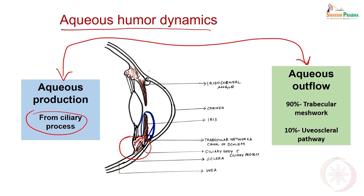The aqueous humor goes from the posterior chamber and then comes to the anterior chamber. The iris acts as a gate, and then from the canal of Schlemm — which is an opening — and the trabecular network, when it dilates this is the opening of the canal of Schlemm, and when it relaxes this closes. From here it comes to the cornea and sclera, and that is how 90% of aqueous humor is drained out through the trabecular network via the canal of Schlemm. If the canal of Schlemm is blocked, it will increase the intraocular pressure.